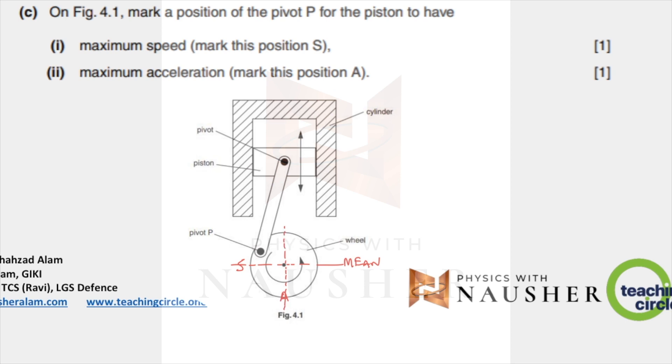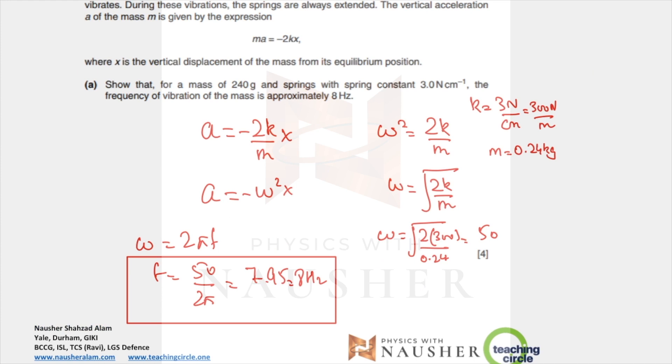Question number three: they've given you this expression, M equals minus 2kx, and they want you to prove that the frequency is 8 hertz. First thing: compare it with the equation for SHM, the general equation which is minus omega squared x. So acceleration is minus 2k over m into x. Compare it with acceleration equals minus omega squared x. Now omega squared and 2k over m must be equal, so omega should be equal to square root of 2k over m.